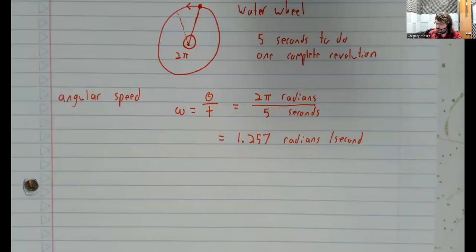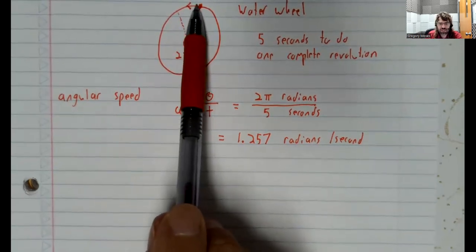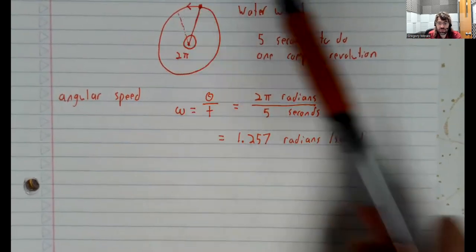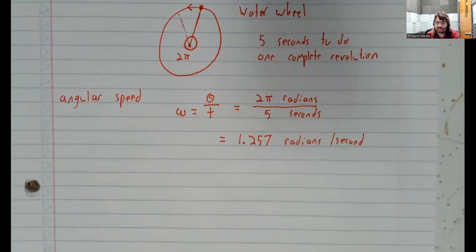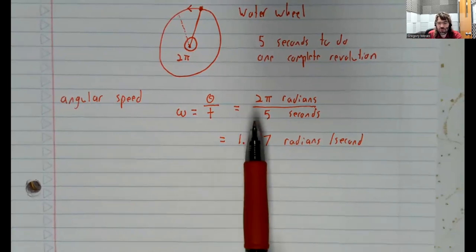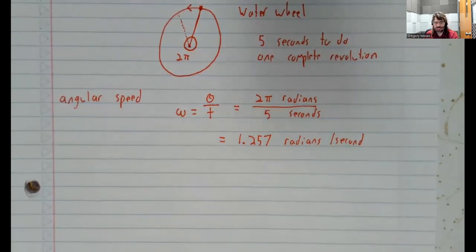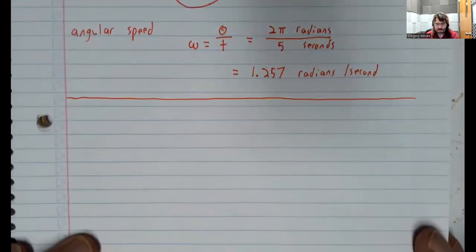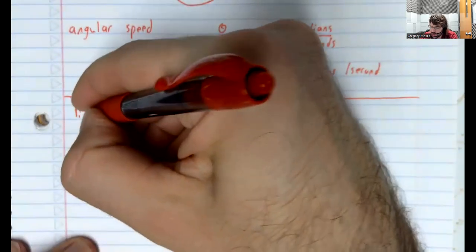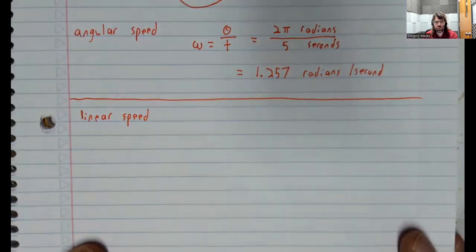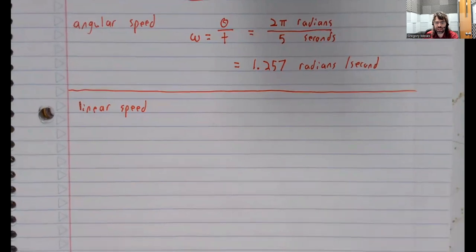Now, meanwhile, this point on the water wheel is physically traveling through space. And it makes perfect sense to talk about its speed in feet per second or meters per minute, or some measurement of speed that is not talking about rotations. So, this formula, we talk about linear speed. Just to make sure we don't confuse it with angular speed.